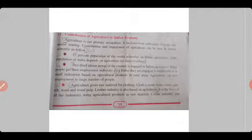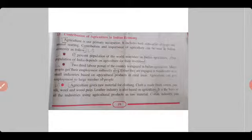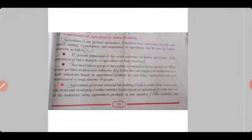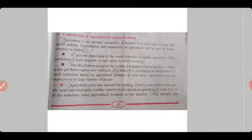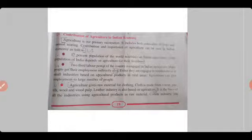Agriculture is our primary occupation. It includes both cultivation of crops and animal rearing. The contribution and importance of agriculture can be seen in India's economy: 17% of the population of the world depends on Indian agriculture, and two-thirds of the population of India depends on agriculture for their livelihood. Two-thirds of the labor power of the country is engaged in Indian agriculture.